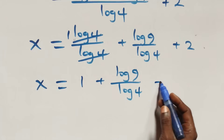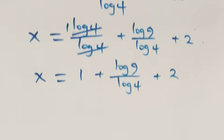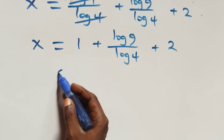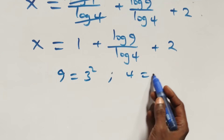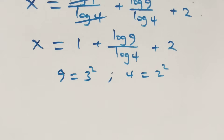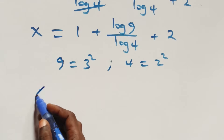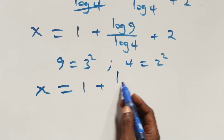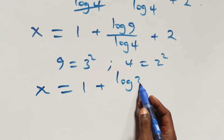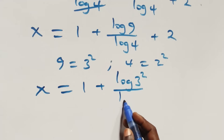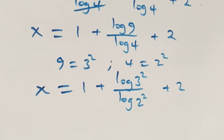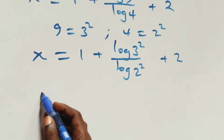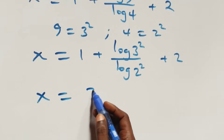We can write 9 as 3 times 3, which is 3 squared, and also 4 as 2 times 2, which is 2 squared. What we have here becomes x equals 1 plus log of 3 squared over log of 2 squared, plus 2. Then 1 plus 2 equals 3. So we have x equals 3 plus log of 3 squared over log of 2 squared.